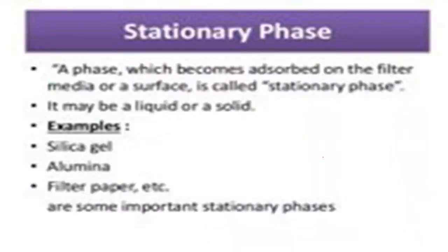The stationary phase is a phase which becomes adsorbed on the filter area or a surface - it may be a liquid or a solid. Examples of stationary phase include silica gel, alumina, and filter paper.